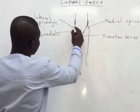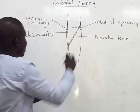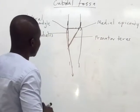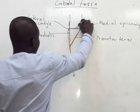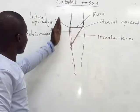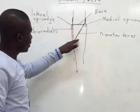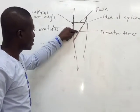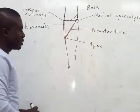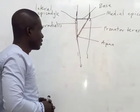If we take an imaginary line connecting these two epicondyles — the lateral epicondyle and medial epicondyle — then we have this triangular-shaped fossa known as the cubital fossa. The base of the cubital fossa is formed by this imaginary line joining these two epicondyles. The lateral margin is formed by the medial border of the brachioradialis muscle. The medial border is formed by the lateral margin of the pronator teres muscle. The apex is formed when the pronator teres is crossed by the brachioradialis muscle.